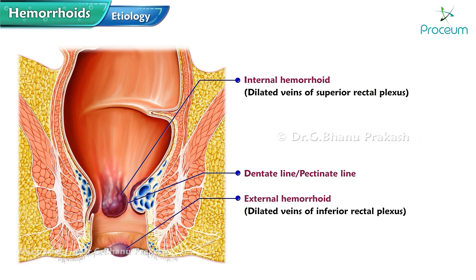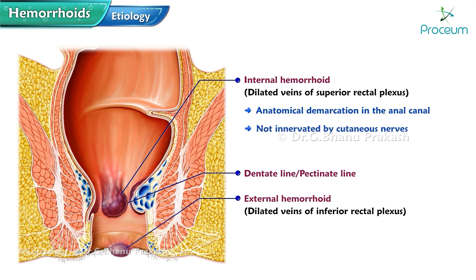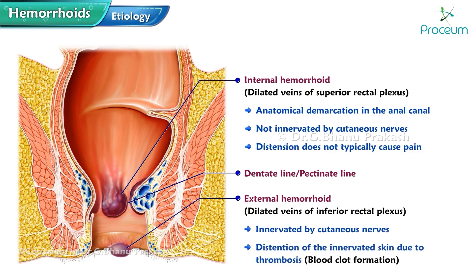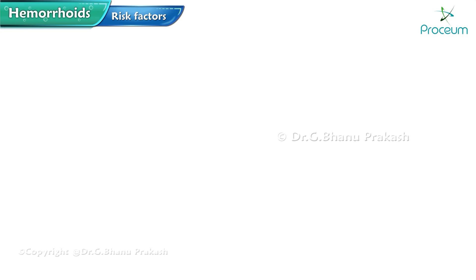Internal hemorrhoids develop above the dentate line. The area above the dentate line is not innervated by cutaneous nerves, so distension of internal hemorrhoids does not typically cause pain. External hemorrhoids develop below the dentate line, which is innervated by cutaneous nerves. Distension of the innervated skin due to thrombosis in external hemorrhoids results in severe pain.